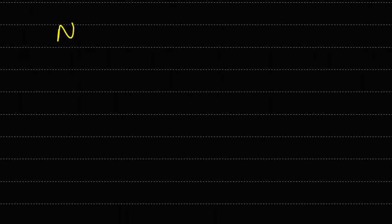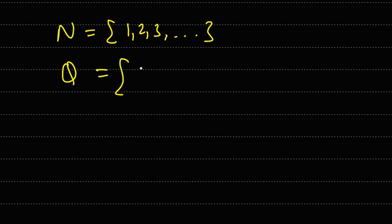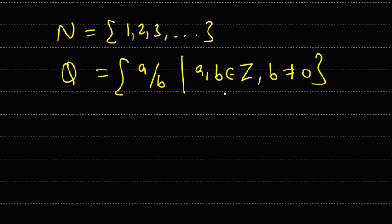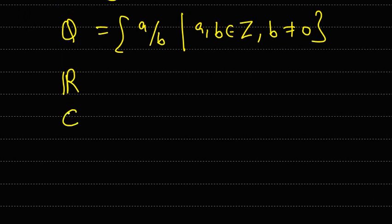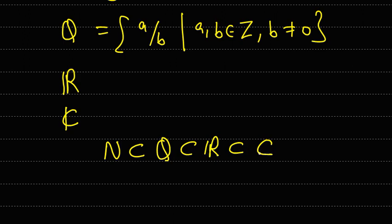There is the set N, which is the set of natural numbers — it contains 1, 2, 3 and so on. Then we have the set Q, which is the set of rational numbers. In set builder form, Q is defined as {a/b such that a and b are integers, provided b is not equal to 0}. Similarly, we consider the set of real numbers, represented by capital R, and the set C, which is the set of complex numbers. Clearly, the set of natural numbers is a subset of rational numbers, which is a subset of real numbers, which is a subset of complex numbers.